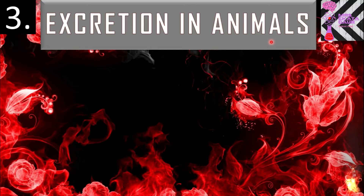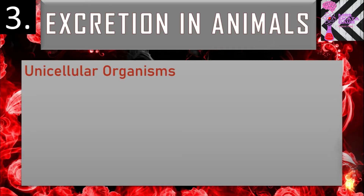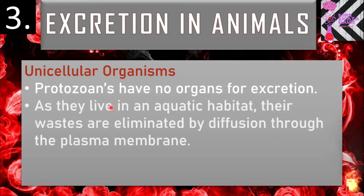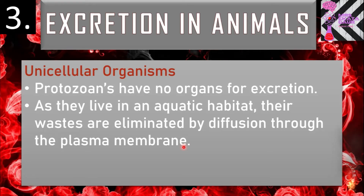Let's see the excretion in animals. In unicellular organisms such as protozoans, there are no organs for excretion. As they live in an aquatic habitat, their waste is eliminated by diffusion through the plasma membrane. They have no specific organs; the diffusion of waste occurs through the plasma membrane. Remember these points very well, as you will get many questions from here.